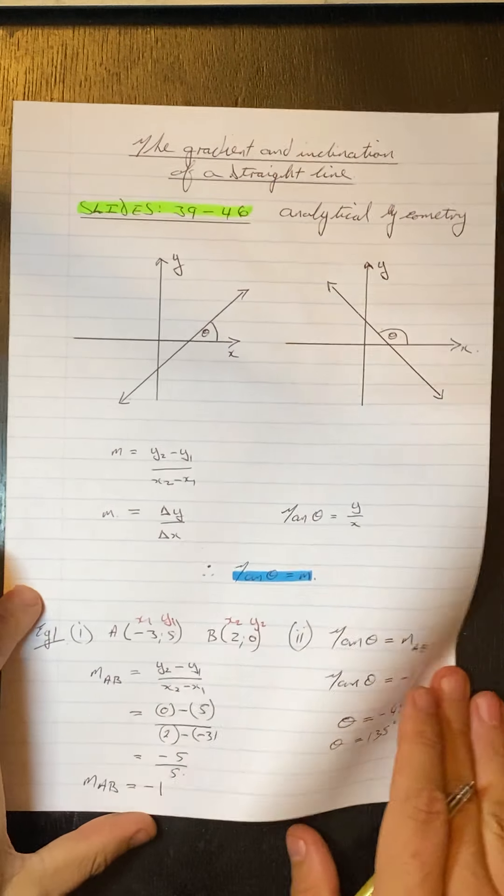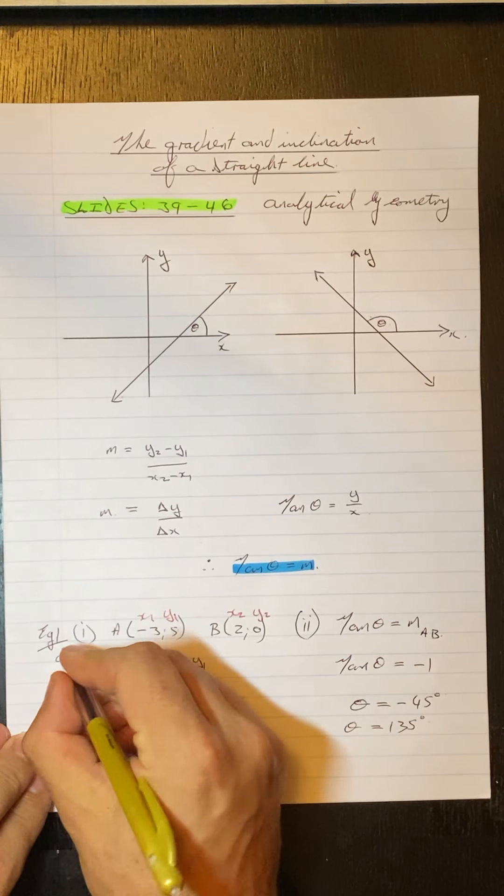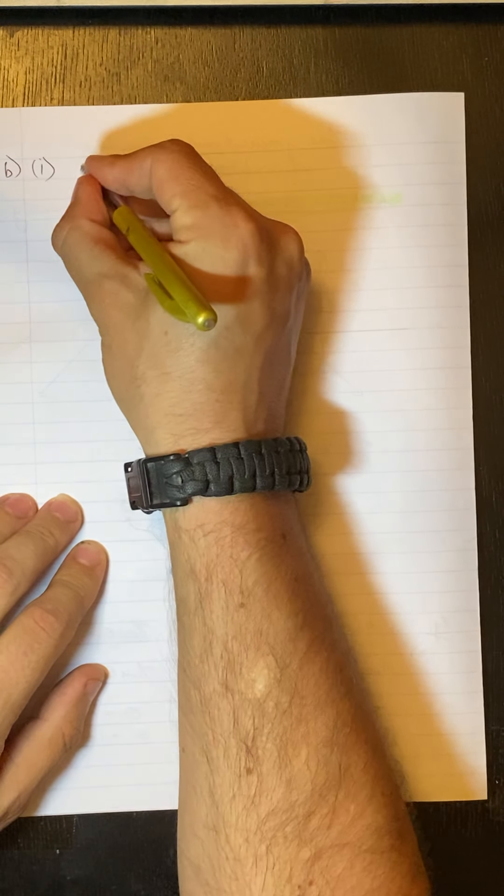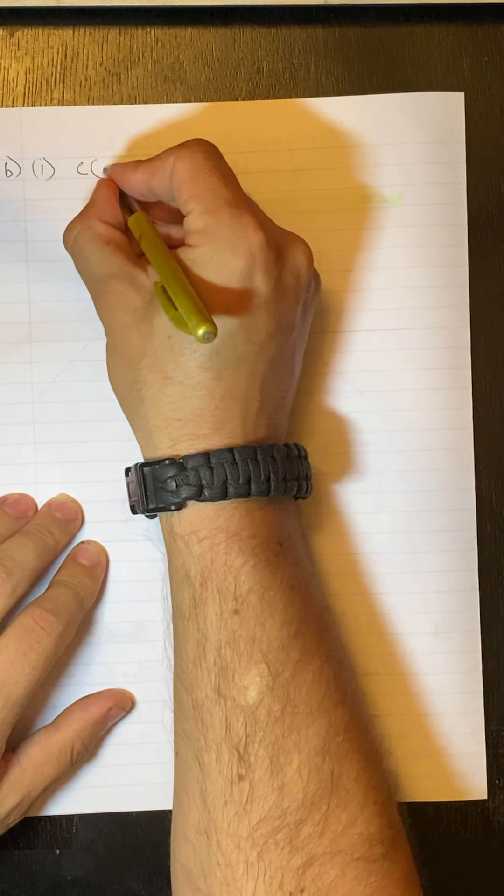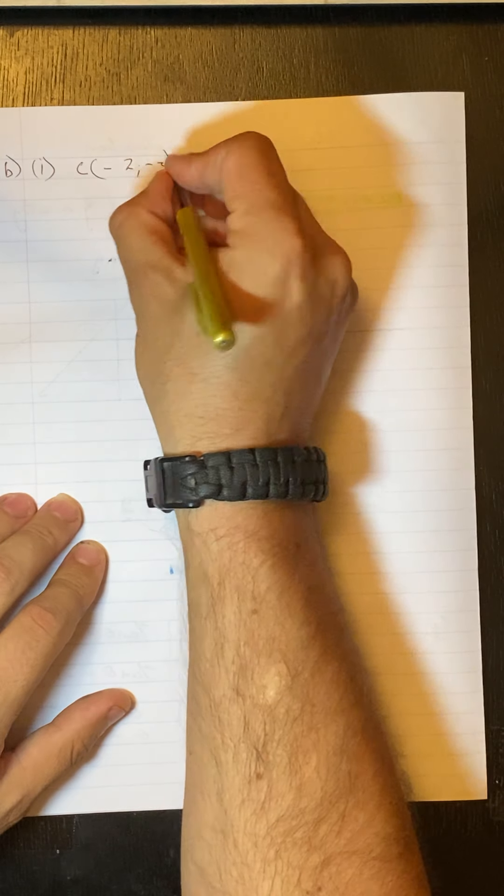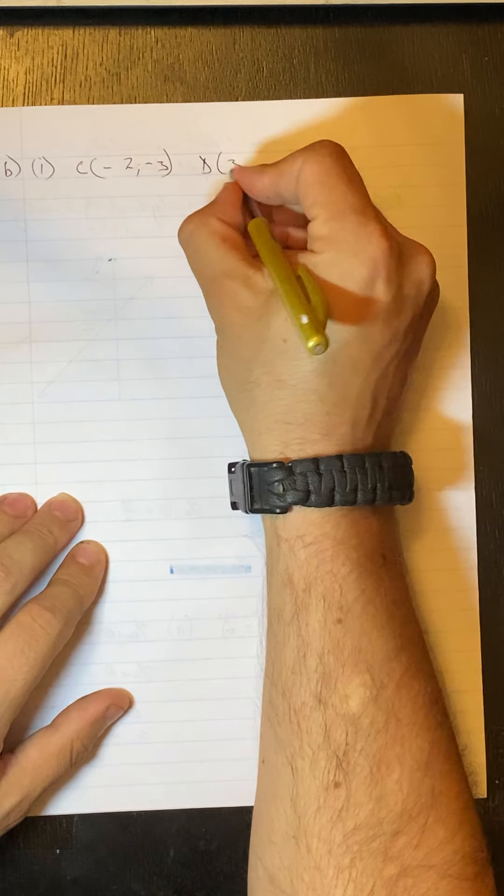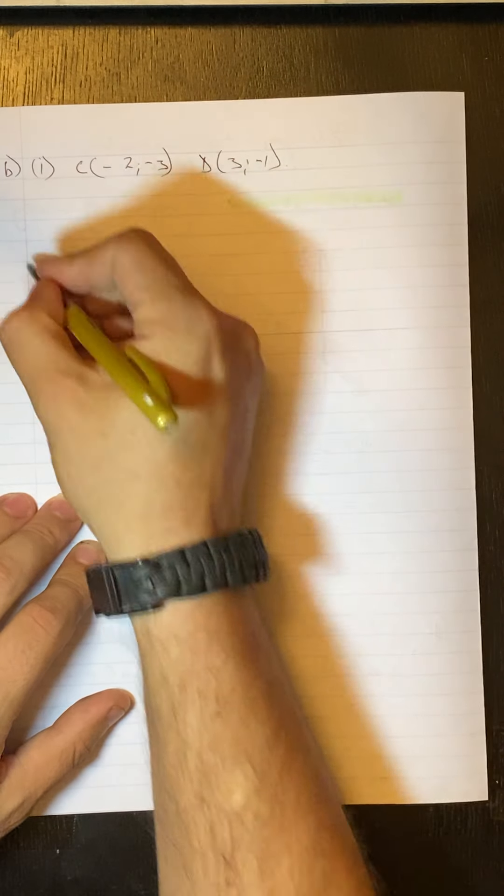If we look at question, this was question A. If we look at question B, it's the same question, just different points. And they are asking, find the gradient between the two points, which are C, minus 2, minus 3, and our second point is D, which is 3, and minus 1.